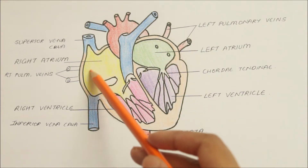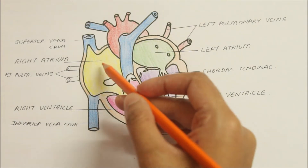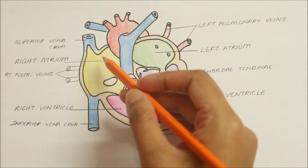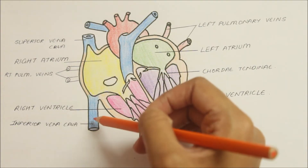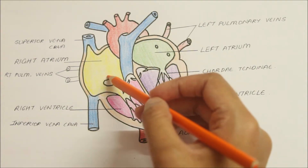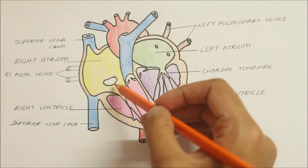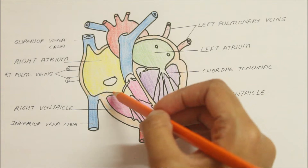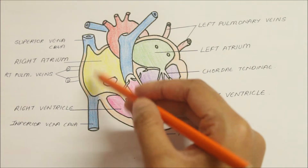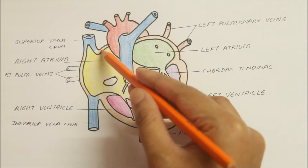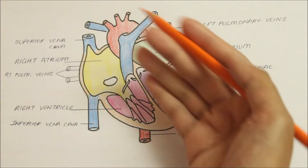First let's begin with the right atrium. The right atrium is the right upper chamber of the heart. It receives venous blood from the whole body through the superior and inferior vena cava and pumps it to the right ventricle through the right atrioventricular or tricuspid opening. It forms the right border, a part of the upper border, the sternocostal surface, and the base of the heart.